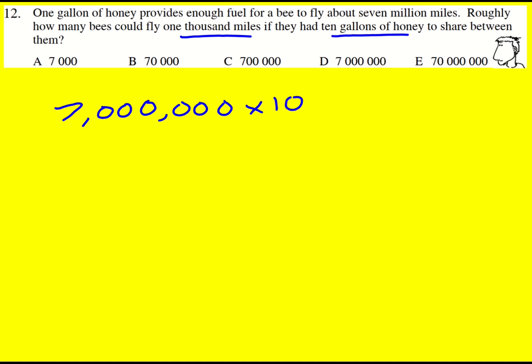Well, one bee could then go 70 million miles on that 10 gallons of honey. If we had a certain number of bees, we would then divide through by n to work out how much they would each travel.